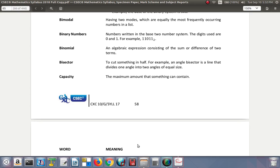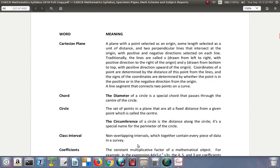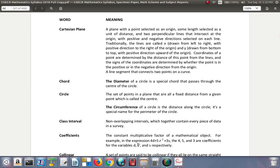Capacity: the maximum amount that something can contain, usually called volume. Cartesian plane: a plane with a point selected as origin, some length as unit of distance, and two perpendicular lines intersecting at the origin with positive and negative directions selected on each line. Traditionally the lines are x drawn left to right with positive direction to the right, and y drawn bottom to top with positive direction upward. Coordinates are determined by distance from the lines and the sign depends on whether the point is in the positive or negative direction from the origin.